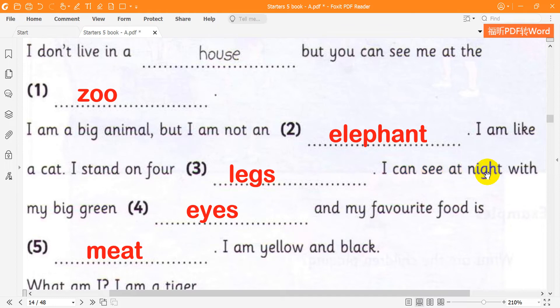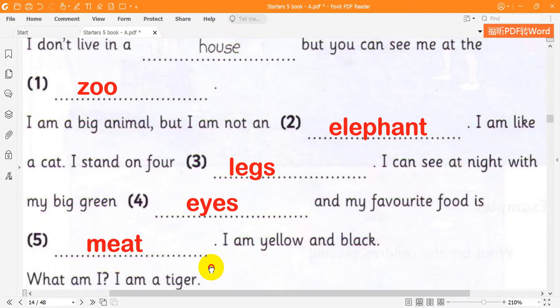I can see at night with my big green eyes. And my favorite food is meat. I am yellow and black. What am I? I am a tiger.